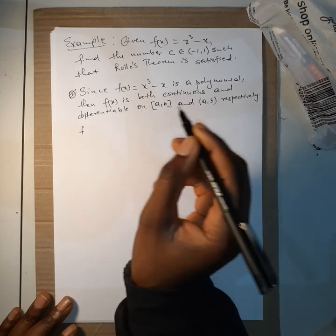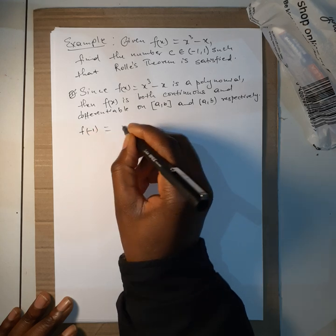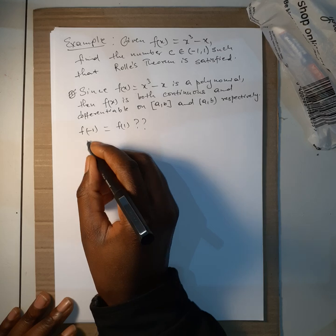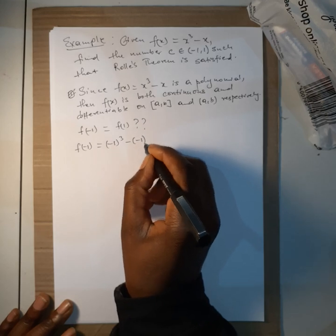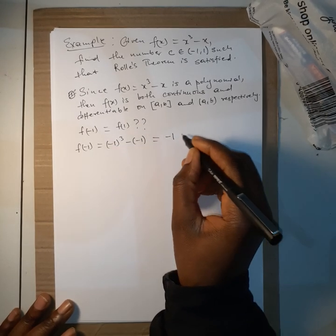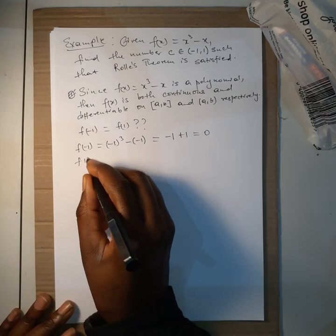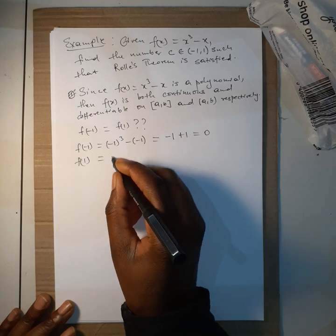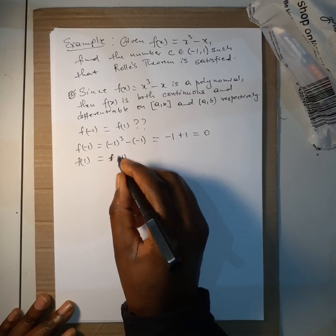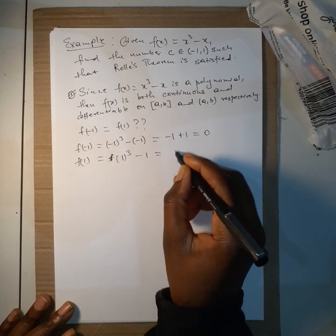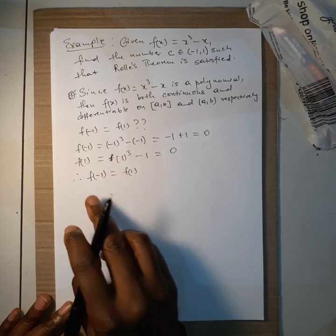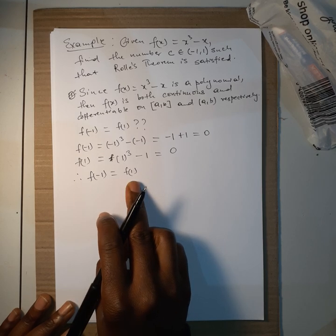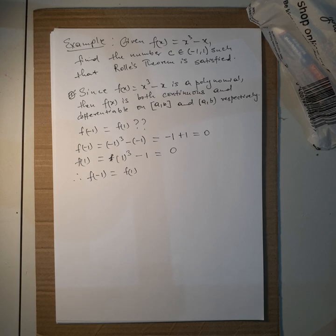The third hypothesis requires us to check whether f(-1) equals f(1). We find that f(-1) = (-1)³ - (-1) = -1 + 1 = 0. And f(1) = (1)³ - 1 = 0. Therefore, f(-1) is equal to f(1), confirming the third condition is satisfied.